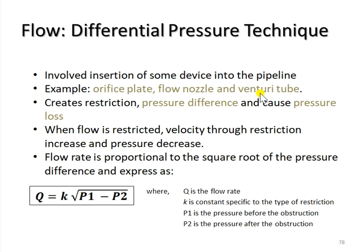These sensors create restriction to the flow and cause a pressure loss. When the flow is restricted, the velocity through the restriction increases, but the pressure decreases.